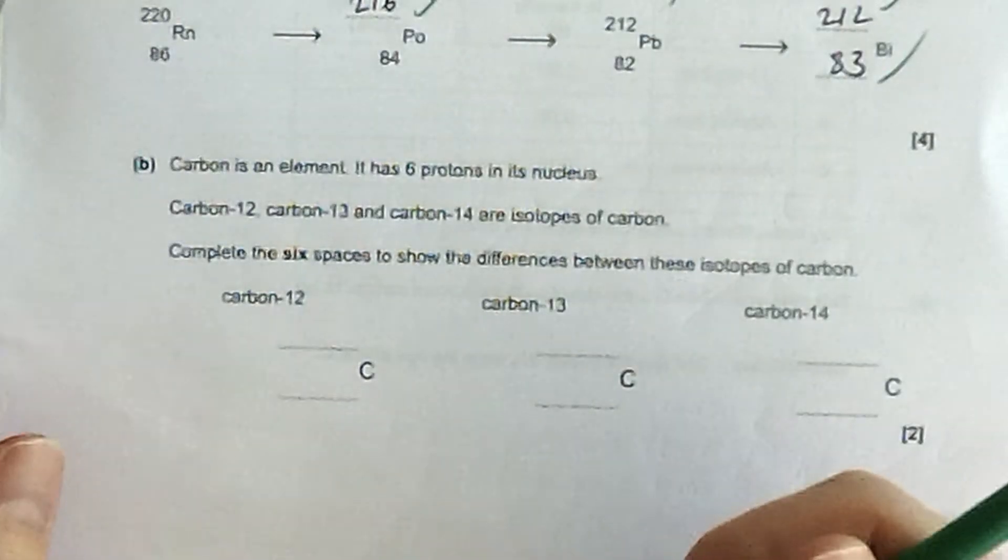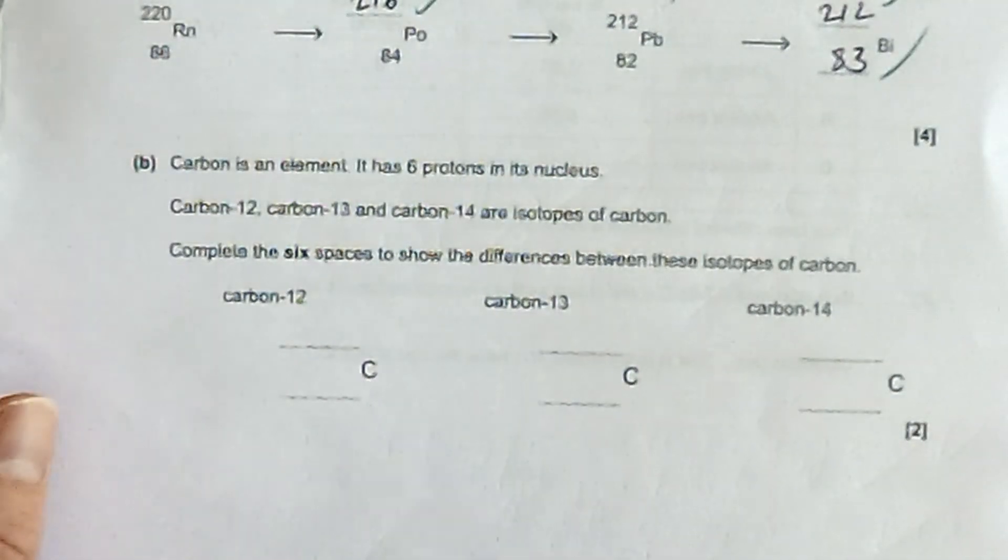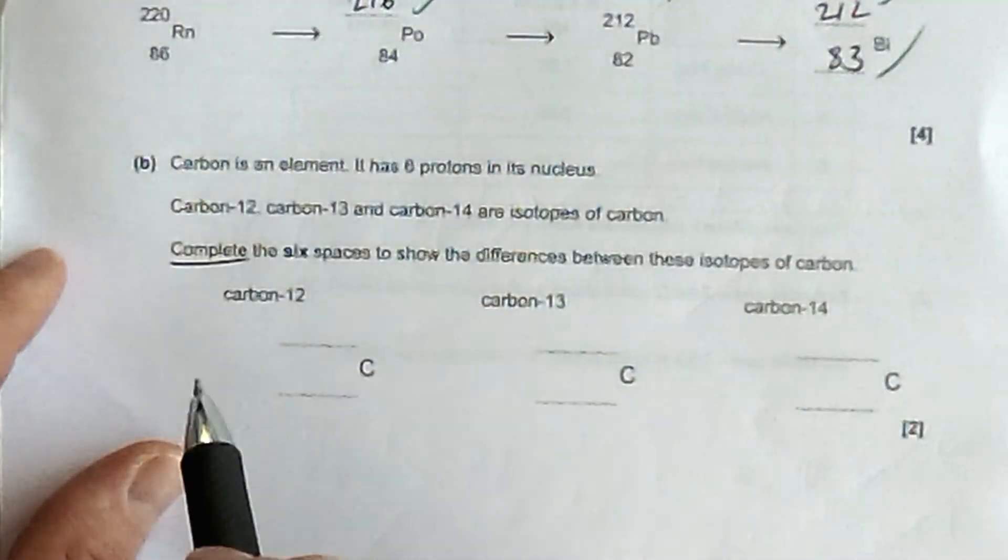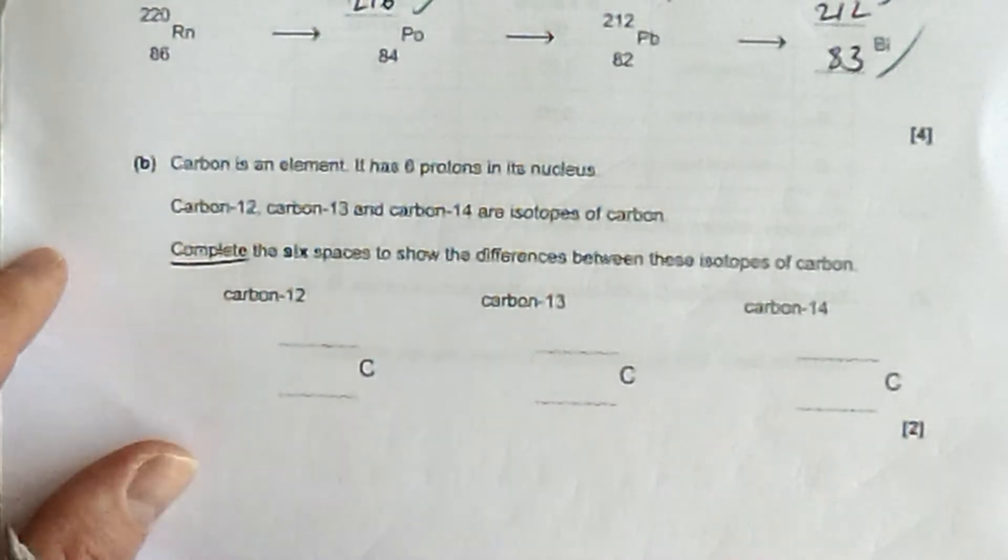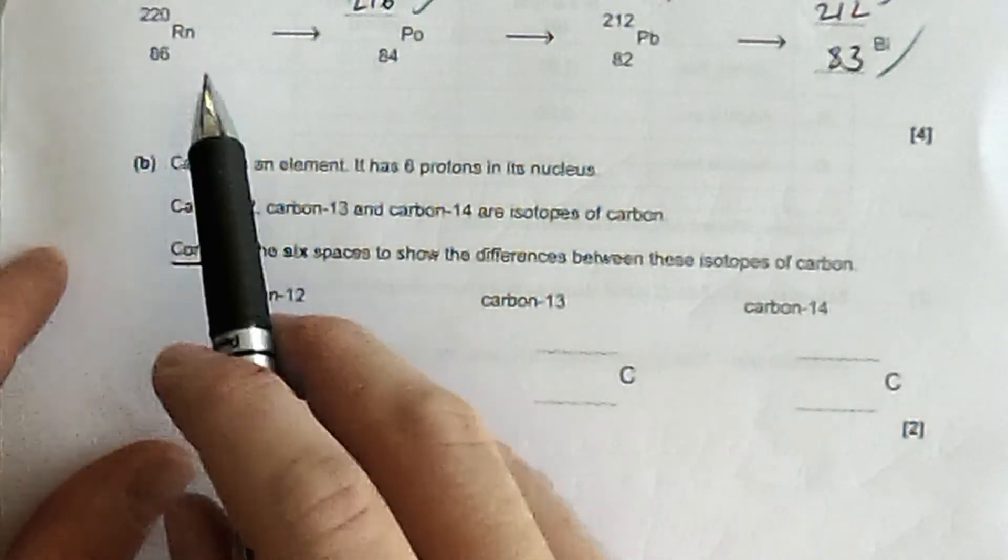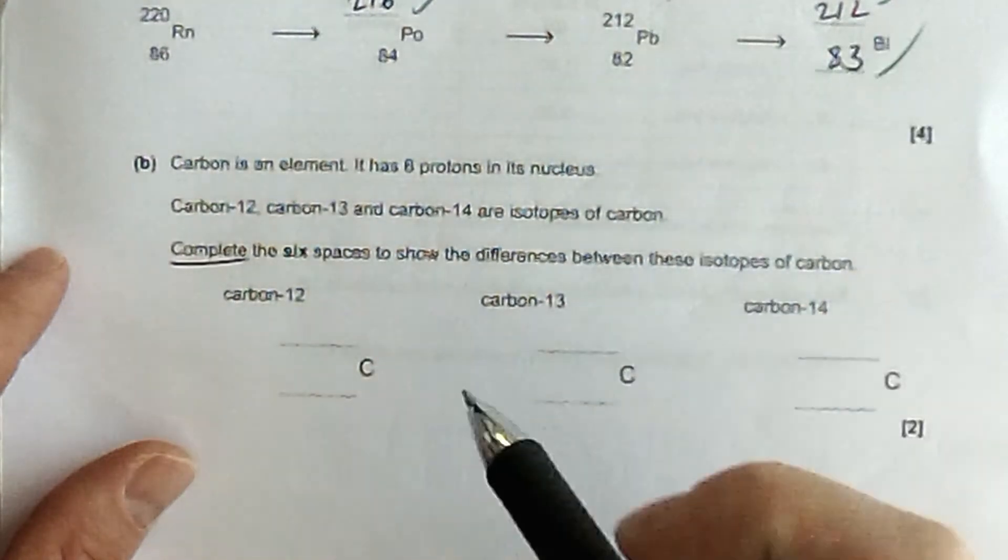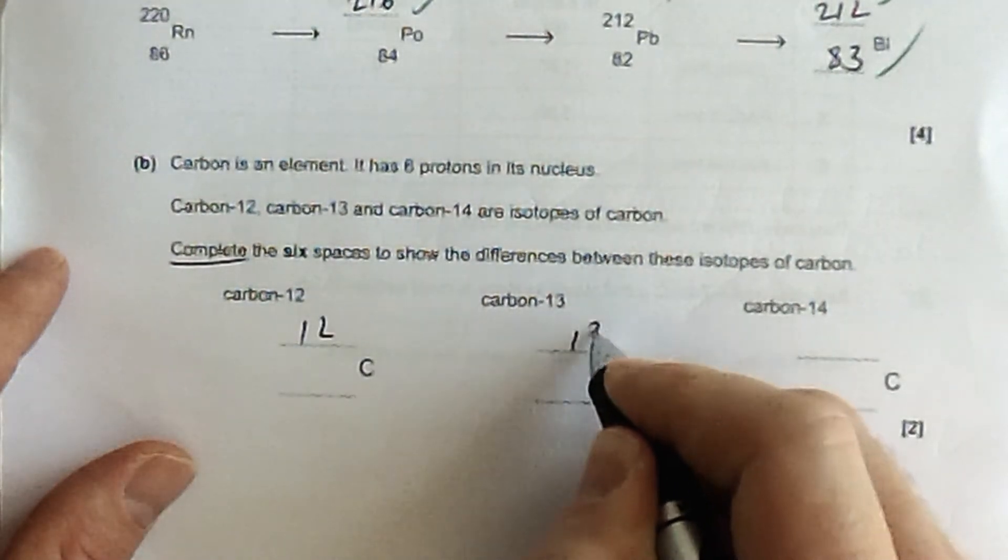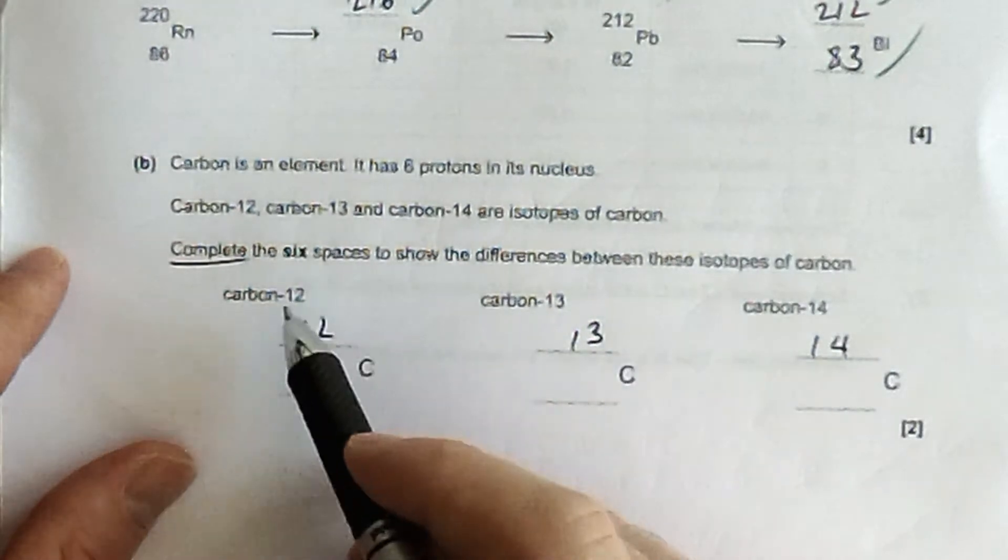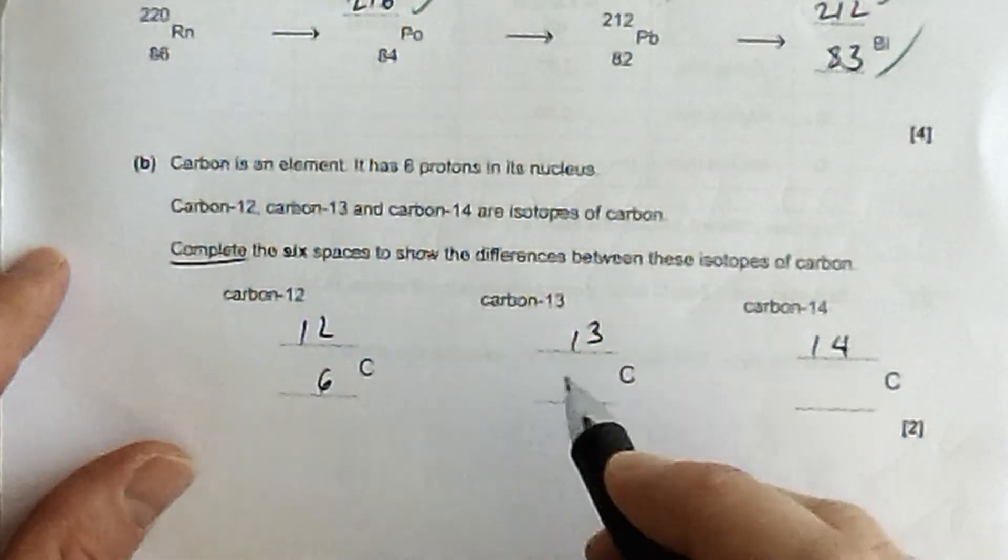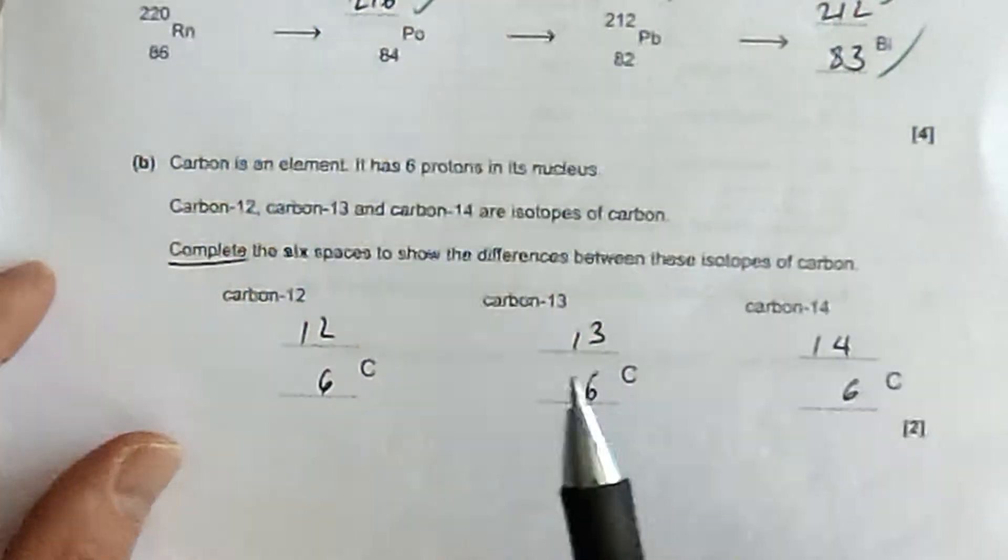Then carbon is an element and it has 6 protons. So everything, every single carbon has 6 protons. You need to complete this for carbon-12, carbon-13, and carbon-14 isotopes. So look, which number is it, the bigger one or the little one that goes on the top line? It's the bigger number, the mass number, and the number after the carbon refers to the mass.